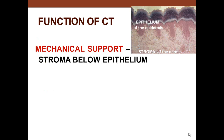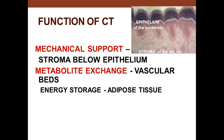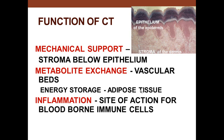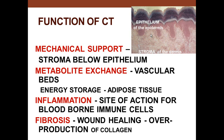Connective tissue provides mechanical support as a stroma below the epithelium. Here we see the epidermis and the connective tissue stroma of the dermis below, which provides support. It also enables metabolic exchange through vascular beds that provide nutrients to epithelium on the surface. Adipocytes store fat for metabolic exchange. Connective tissue is also a battleground for the immune system to react to antigens, bacteria, or other pathogens.